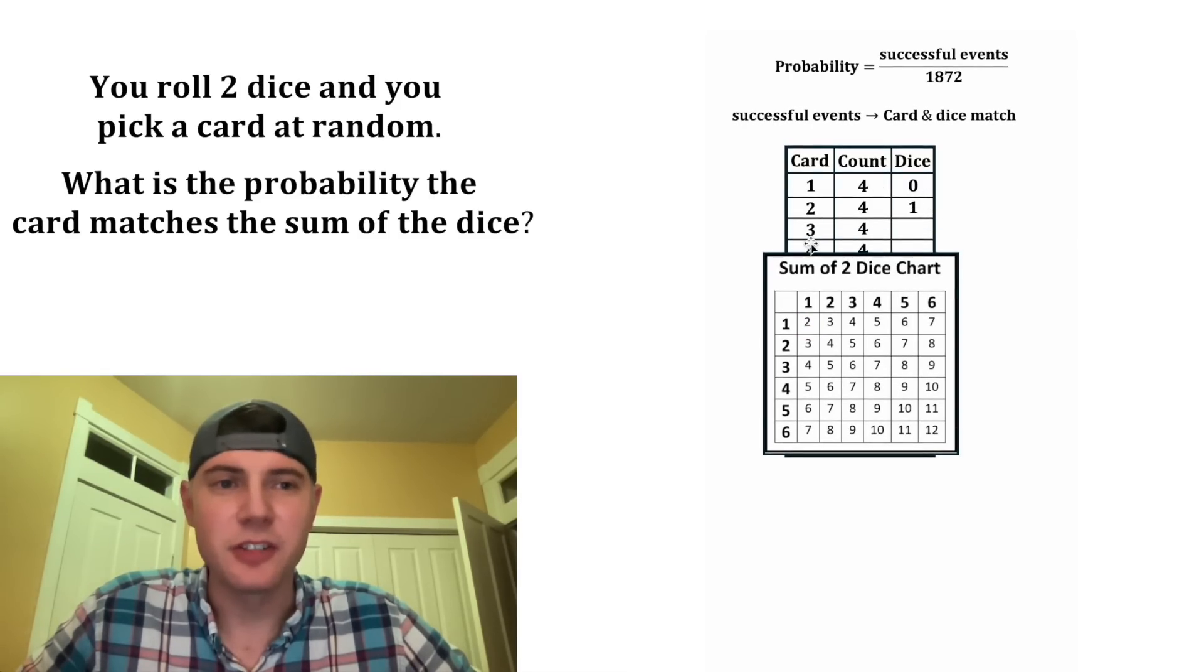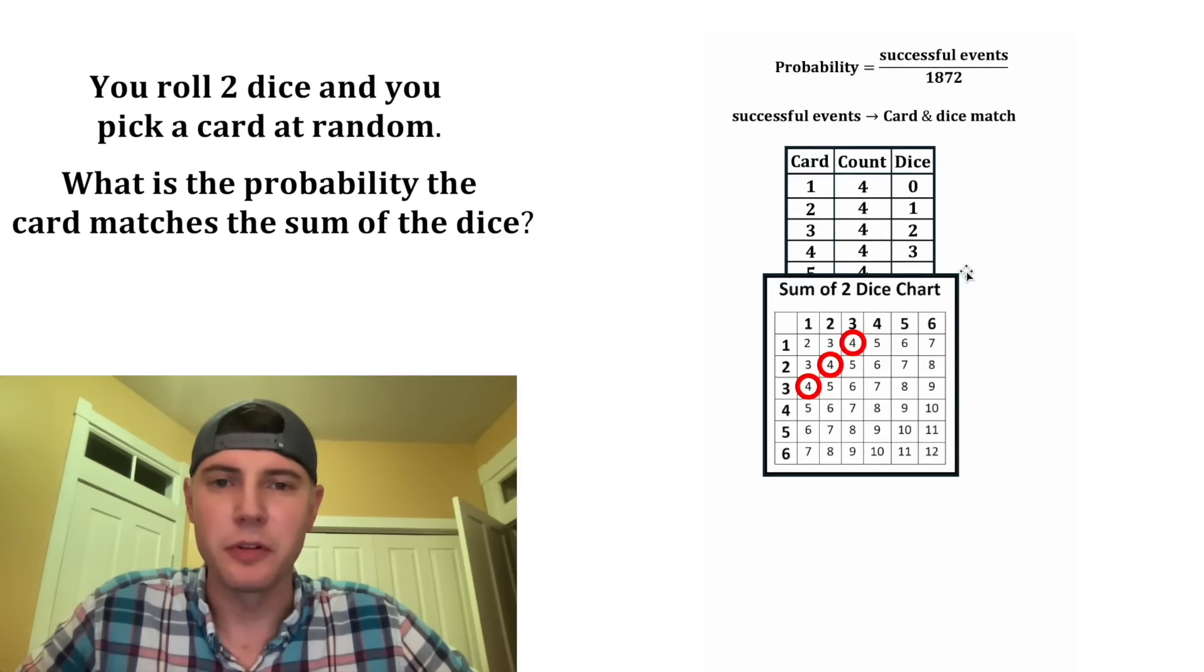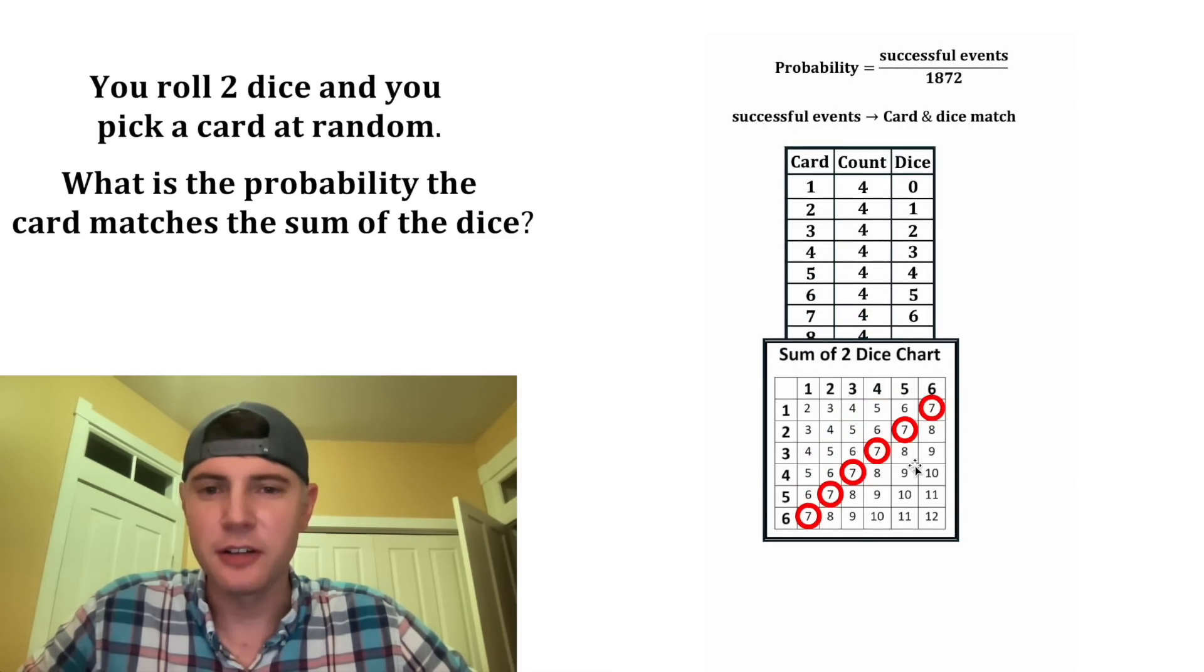How many rolls will have a sum that matches the 3 card? Well, there's 2 of those. So we'll put a 2 right here. And we'll do the same thing here. There are 3 rolls that would match the 4 card. So we'll put a 3 there. 4 rolls match the 5 card. 5 rolls match the 6 card. 6 rolls would have a 7 to match the 7 card.